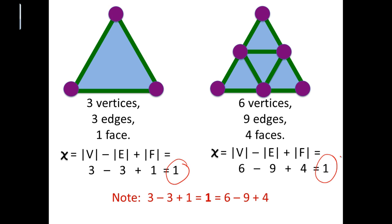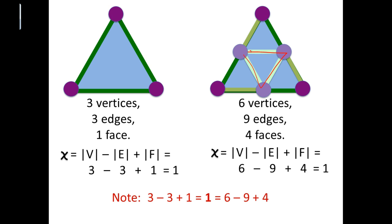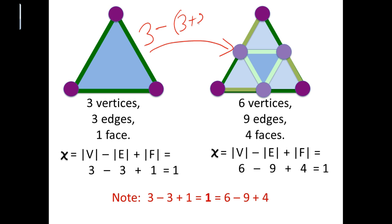It is easy to see that subdividing a triangle does not change the Euler characteristic. We added three additional vertices, which subdivided three of the edges, and we also have three more edges; these three additional edges created three additional faces. So to go from our simple triangle to our subdivided triangle, we add three additional vertices, six additional edges, and three additional faces. Since three minus six plus three is zero, our Euler characteristic does not change — we still have an Euler characteristic of one.